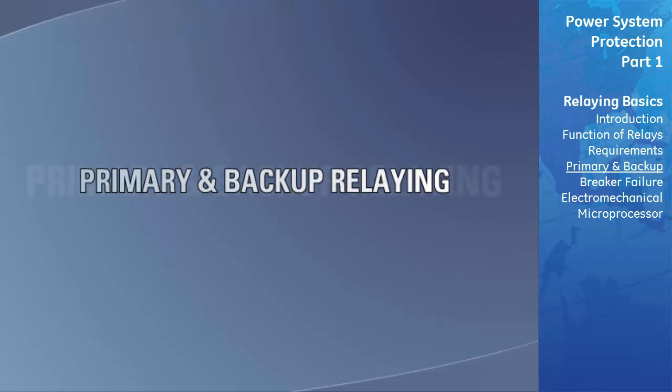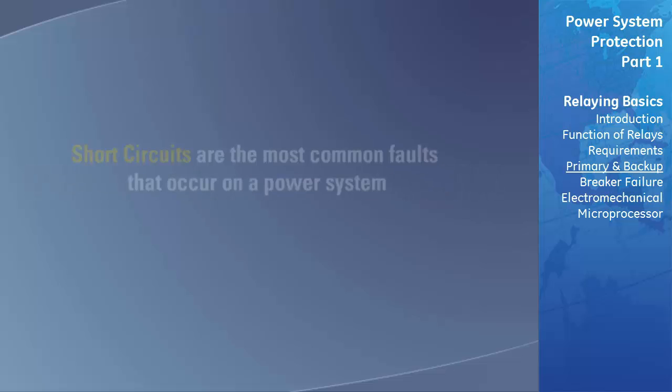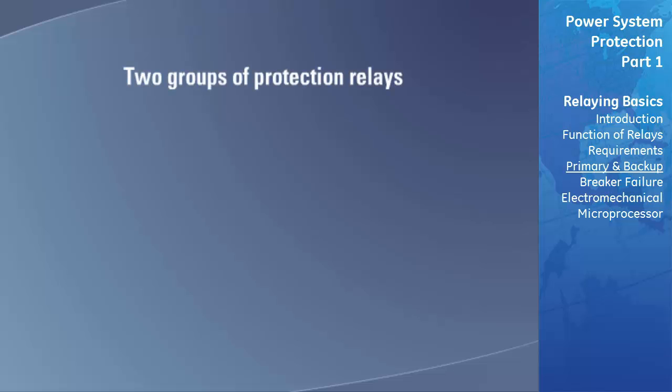In general, the most common faults that occur on a power system are short circuits. We will now consider relays that are dedicated to protection against short circuits. There are two groups. The first group are called primary relays and are the first line of defense, while the second are called backup relays and function only when the primary relaying fails.